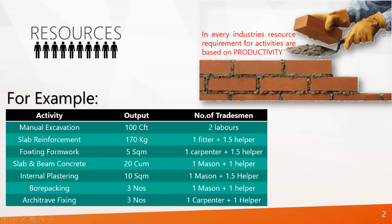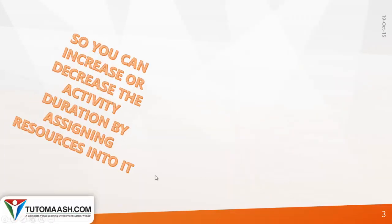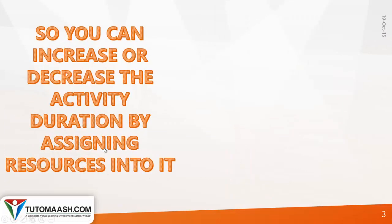And to do a 5 square meter formwork activity, you require 1 carpenter and 1.5 helpers. This kind of productivity can be arrived at based on the tradesman output. You can increase or decrease the activity duration by assigning resources into it.